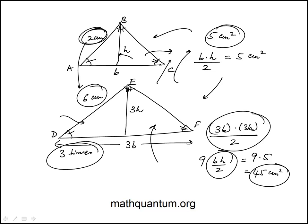Essentially, the multiple would be whatever the ratio of corresponding sides is, squared. That would be the multiple that the area would be. So the answer is 45 square centimeters, choice D.